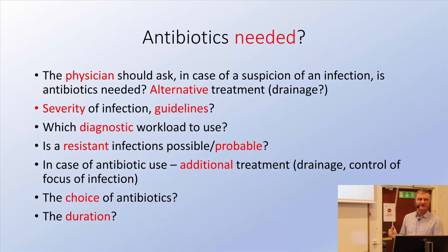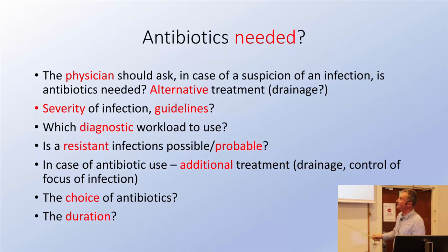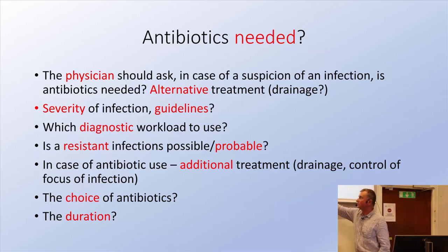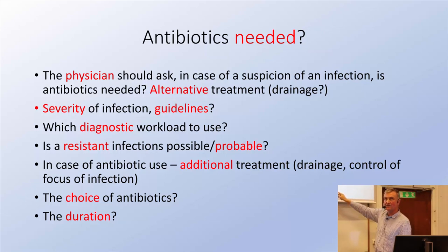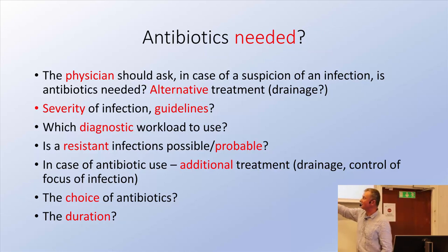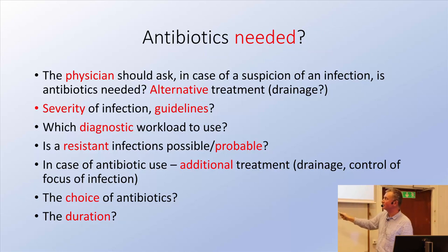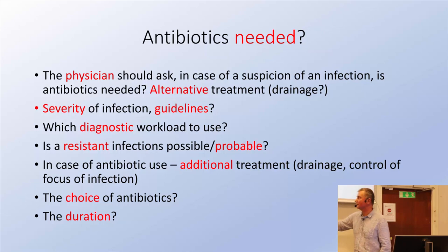So ultimately, is antibiotics needed? The physician should ask, in case of suspected infection: is antibiotic treatment needed? Can I use alternative treatments such as drainage? Consider the severity of the infection and available guidelines — always use available guidelines. What diagnostic workup is needed? Is a resistant infection possible or probable? In case antibiotic use is decided, consider additional treatment and control of the focus of infection.